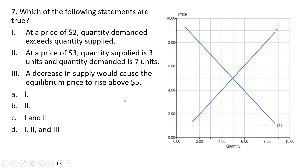Statement 3: a decrease in supply would cause the equilibrium price to rise above $5. If the supply curve shifted to the left, our new equilibrium — the new intersection where supply intersects demand — would occur at a price above $5. So all of these statements are correct. Answer choice D.